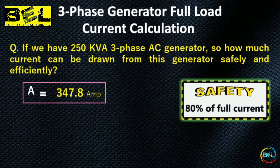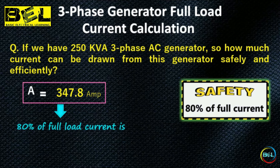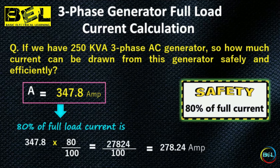We must include the power factor in our full load current calculation. For safety purposes, we never draw the full current from any machine. The full load current is 347.8A, but we will take 80% of that. With a power factor of 0.8 (which is 80%), the safe current is: 347.8 × 0.8 = 278.24 ampere. That is our safe current.